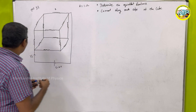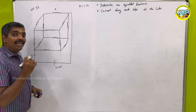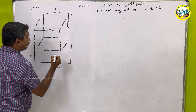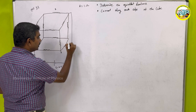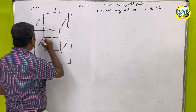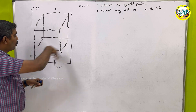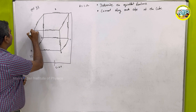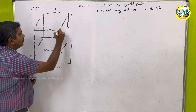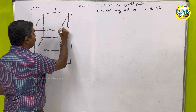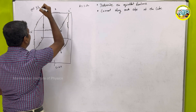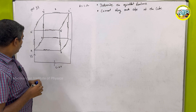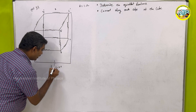I will explain how to solve the problem. First I am going to label the edges. The lower portion of the cube is labeled A, B, C, D. The upper portion of the cube is labeled A prime, B prime, C prime, and D prime.